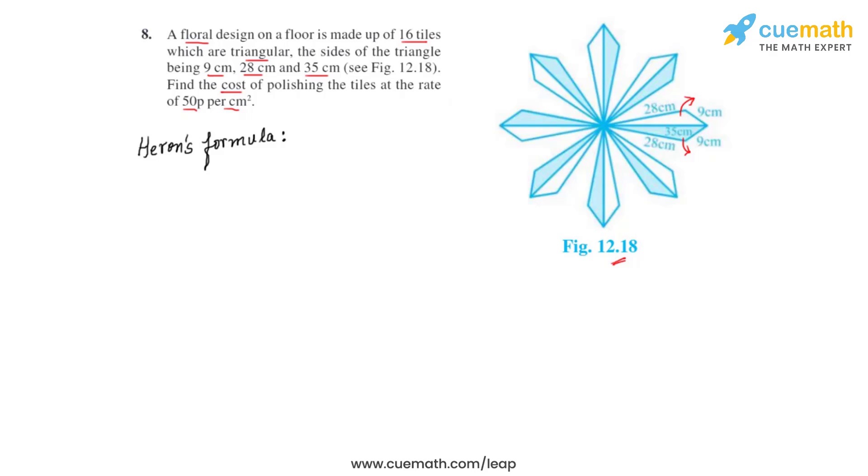So we write the formula: area equals under root s times s minus a times s minus b times s minus c, where s is the semi-perimeter of a triangle while a, b, c are its three side lengths.